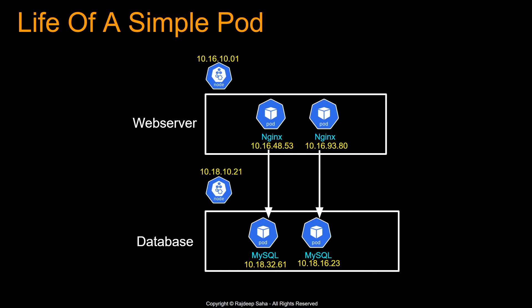One way this web server can talk to the MySQL pods is using the IP address directly. But the life of a simple pod is mortal. This pod, which is running now with this IP address, can go down — it can die. What's going to happen is the replica set will kick in, in case you deployed with a replica set of two, and it's going to bring up another pod with the same container image. But the IP address of this new pod is going to be different than the one that died. So if this Nginx pod was using the IP address to reach the MySQL pod, it's kind of hanging now, because it doesn't know how to discover this MySQL pod and has no way to reach it.